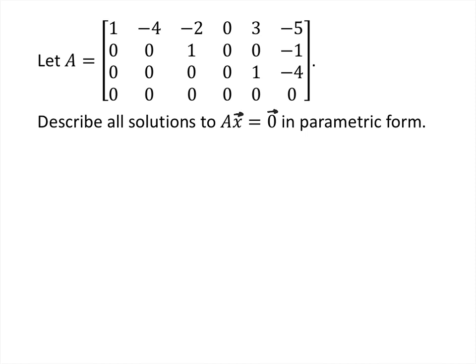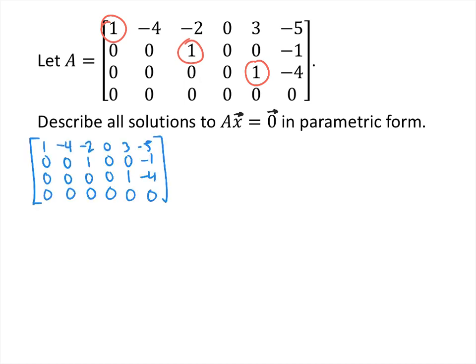We notice that this matrix is in echelon form, and we can see where the pivots are — there's a pivot here, here, and here. But it's not in reduced echelon form, and whenever we want the actual solution to a system of equations, or a vector equation, or a matrix equation, it's usually helpful to have it in reduced echelon form. So we should do a couple more row reduction steps. The steps we're going to do are: replace row 1 by row 1 plus 2 times row 2.